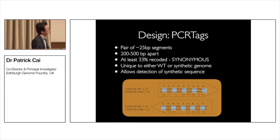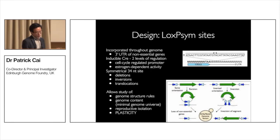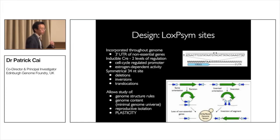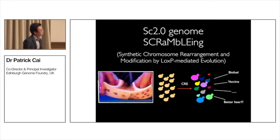The loxP sites we put in are not traditional loxP sites — they are symmetrical loxP sites, 34 base pair inverted repeats. The consequence is that when a piece of DNA is flanked by two loxP sites, you express Cre recombinase and you have a 50% chance of looping out the DNA — giving you a deletion — and a 50% chance of inverting the DNA. You get deletions and inversions at equal frequency, and their combination can also give you translocations, resulting in massive genome rearrangement.